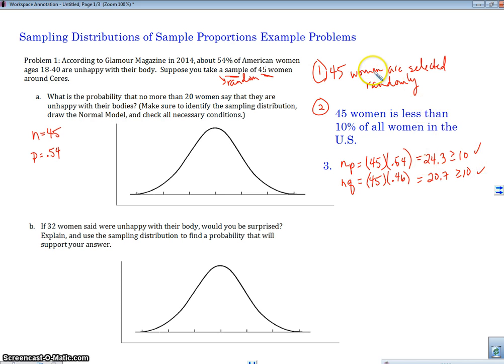So we can, in fact, use the normal model. So let's go ahead and build this normal model. And our mean is going to be our P, so 0.54. And what's our standard deviation going to be? Well, we're going to use that formula that was given on my video or the AP exam handout. So the standard deviation of P-hat is the square root of PQ over N. So let's go ahead and calculate that out. 0.54 times 0.46 over 45.